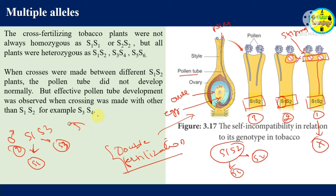Condition three: pollen comes from a plant carrying S3S4. Both S3 and S4 are totally new to the S1S2 stigma, so both types of pollen are allowed to germinate. The rule is: if the same allele exists in the stigma and the pollen, it is incompatible — self-sterility. If the alleles are different, pollen germination is allowed and it is compatible.